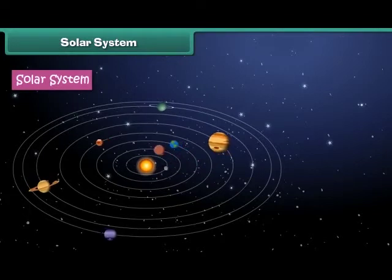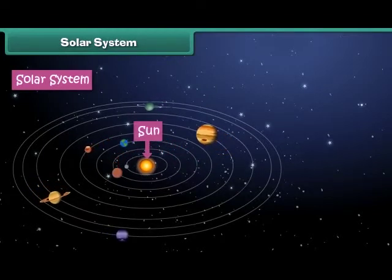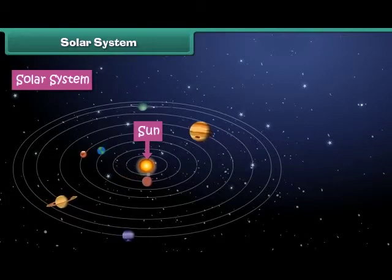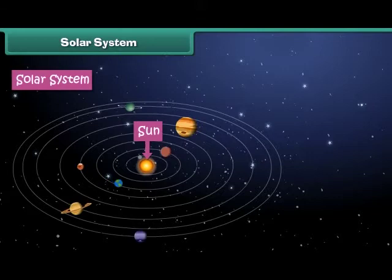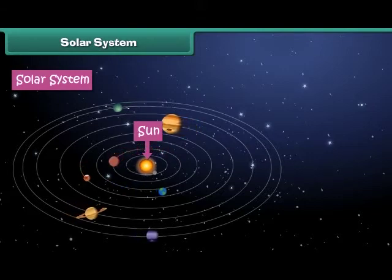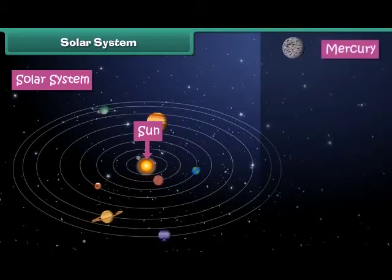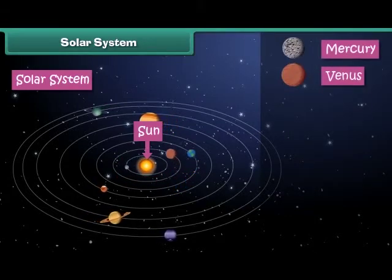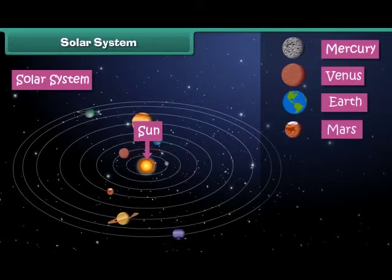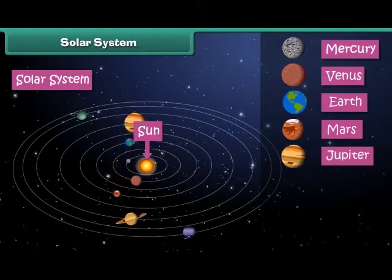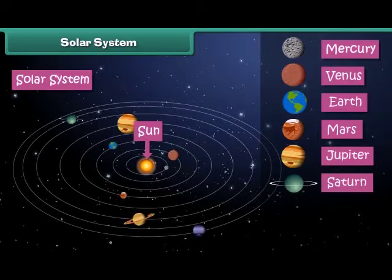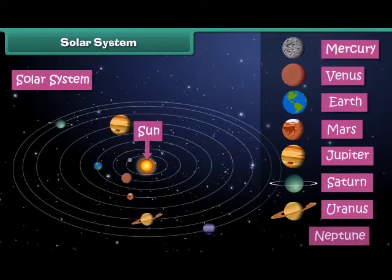We live in the solar system. The solar system is the family of the Sun and its eight planets. The Sun is placed at the center and the eight planets revolve around it. The eight planets are Mercury, Venus, Earth, Mars, Jupiter, Saturn, Uranus, and Neptune.